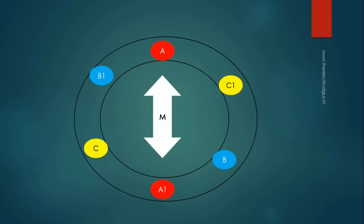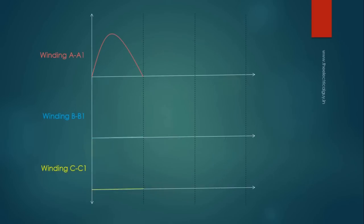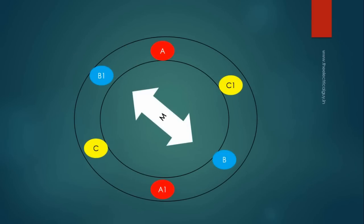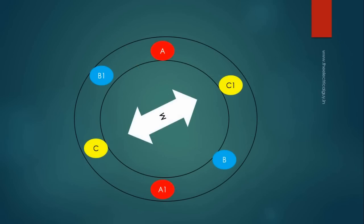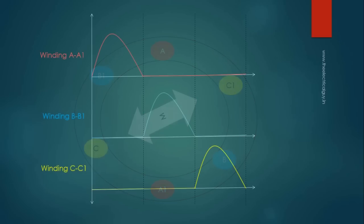Let me make things more clear. When the magnet is in the position shown, voltage across winding AA1 is maximum. When the magnet rotates by 120 degrees, the voltage across winding BB1 is maximum. When the magnet rotates by 240 degrees from its initial position, voltage across winding CC1 gets maximum.